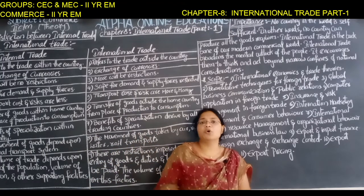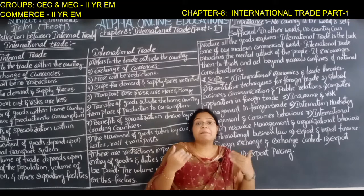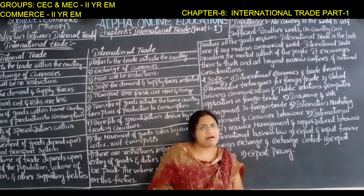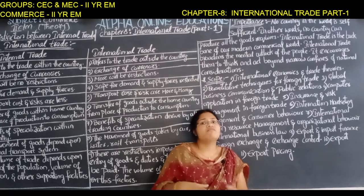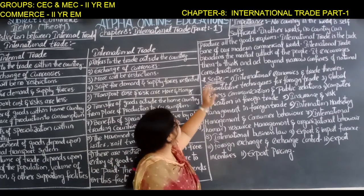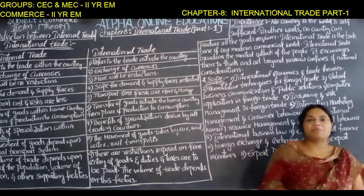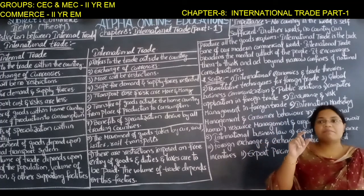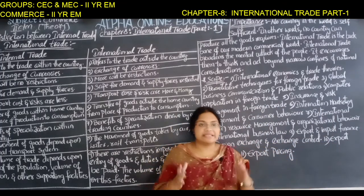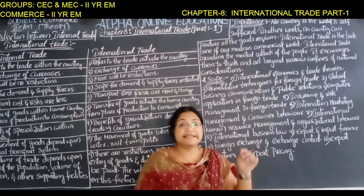Every country has to depend on other countries for certain resources. For example, we depend on Saudi Arabia for petroleum. There is a certain type of interdependency between countries. International trade is the backbone of our modern commercial world — just as we cannot stand without a backbone, the commercial world cannot function without international trade.